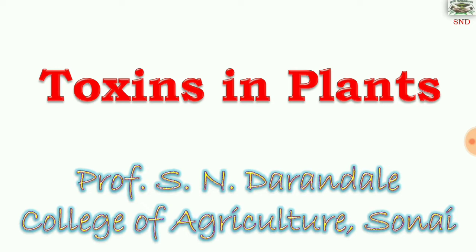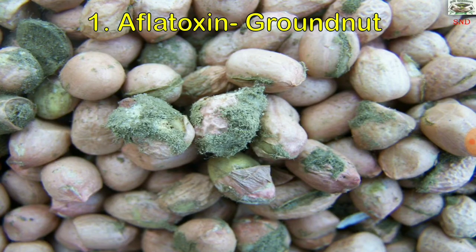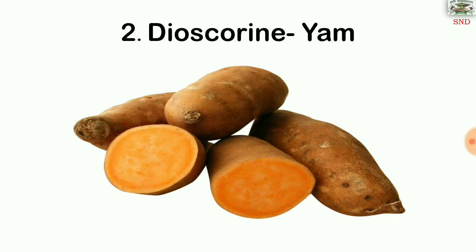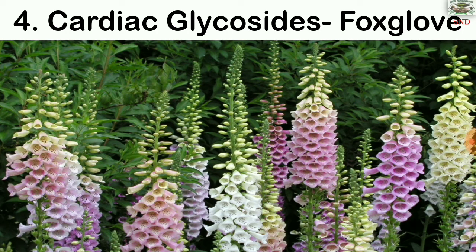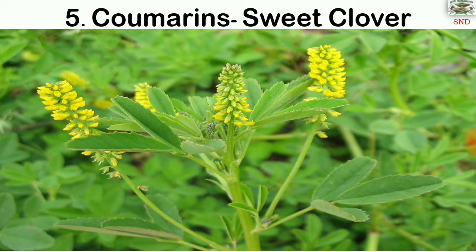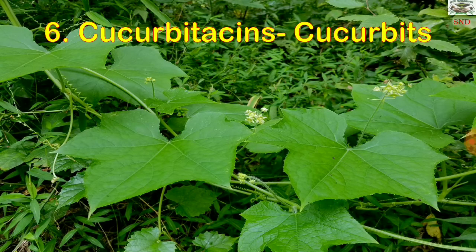We are going to see the toxins in plants. The first is aflatoxin, which is found in groundnut kernels. Diascorin is present in yam. Anti-vitamin E factor is in field pea. Cardiac glycosides are in foxglove. Coumarins are in sweet clover. Cucurbitacins are in cucurbits.